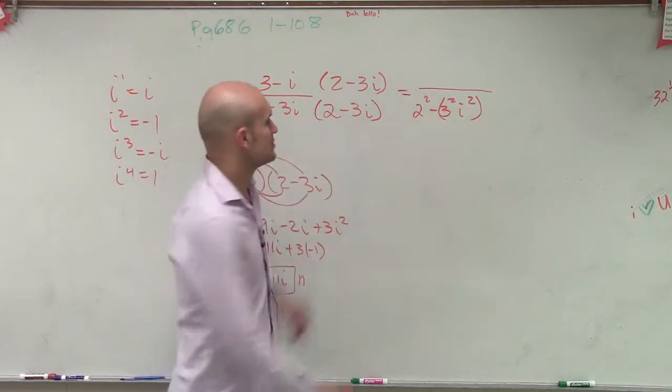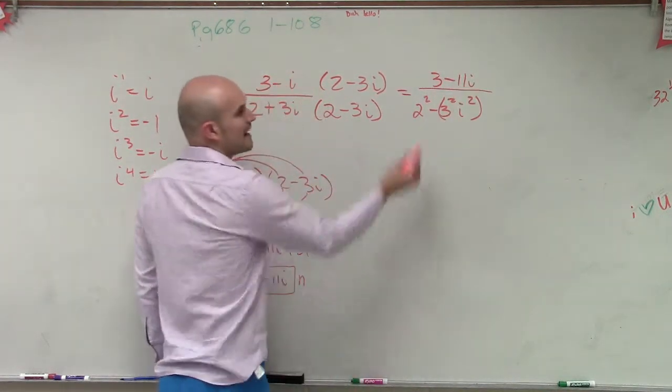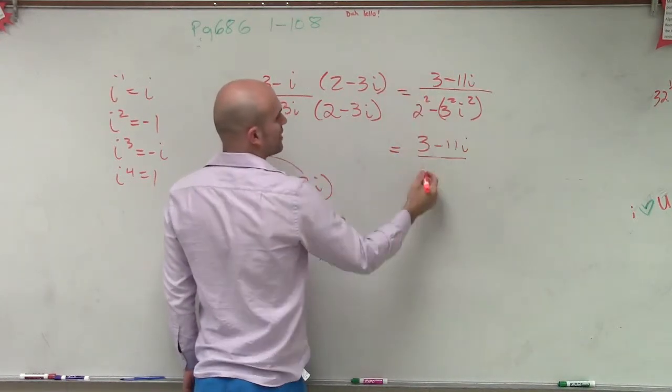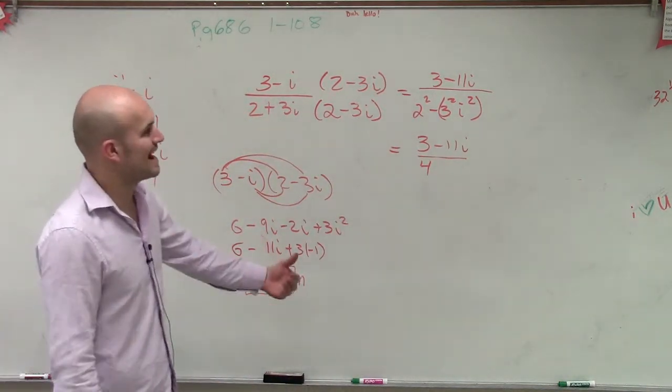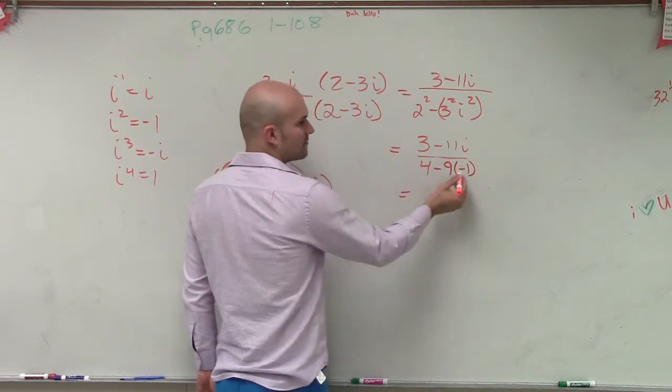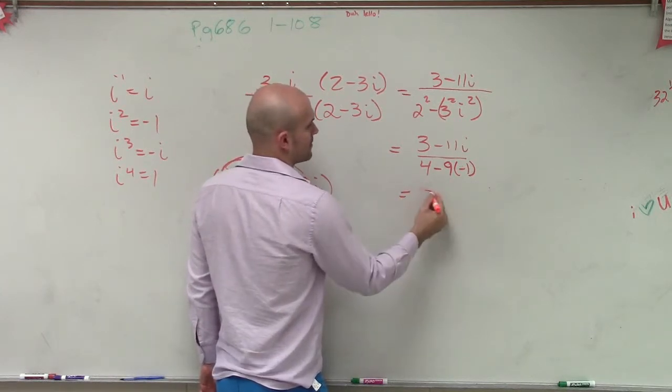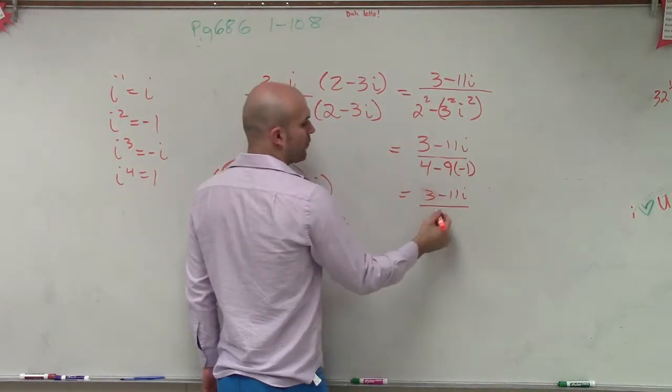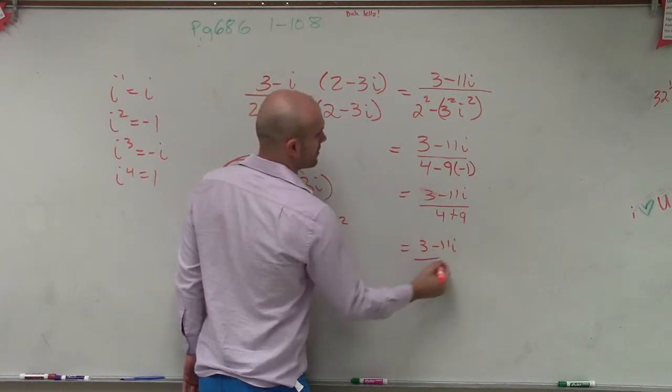And then over here, so we have this now as 3 minus 11i. Now, let's simplify our denominator. So we have 3 minus 11i over 2 squared is 4. Here, I'm going to have minus 3 squared, which is 9, times negative 1. Well, that becomes positive, right? Negative 9 times negative 1 is positive 9. So I have 3 minus 11i over 4 plus 9,